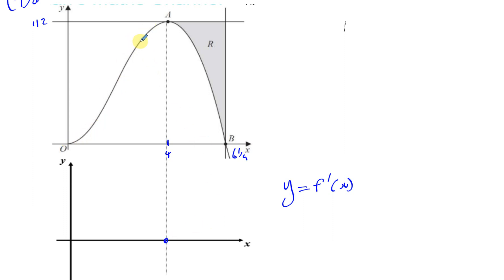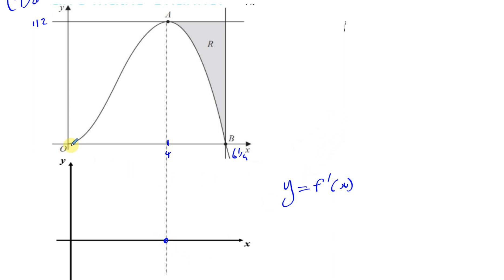Here the gradient is positive and then it becomes negative, so the gradient function will start off on the positive side of the x-axis before this point, and then go to the negative. If it was a minimum turning point, the gradient is negative then positive, so it goes from below the x-axis to above it. But here it's going from positive to negative, so it's coming down towards the x-axis, hits 0, and then becomes negative. Between 0 and A, if you drew a tangent at any point it will have a positive gradient — the gradient is positive throughout.